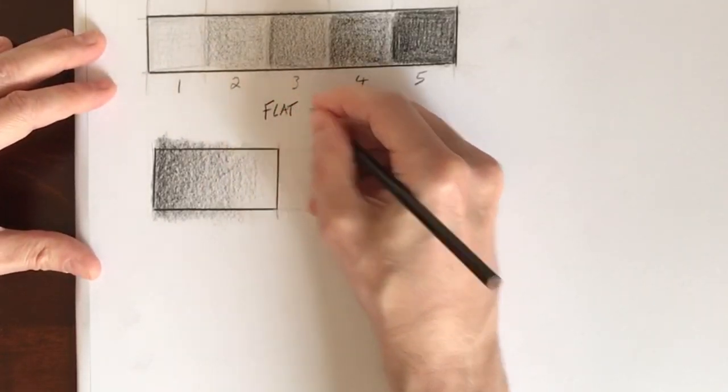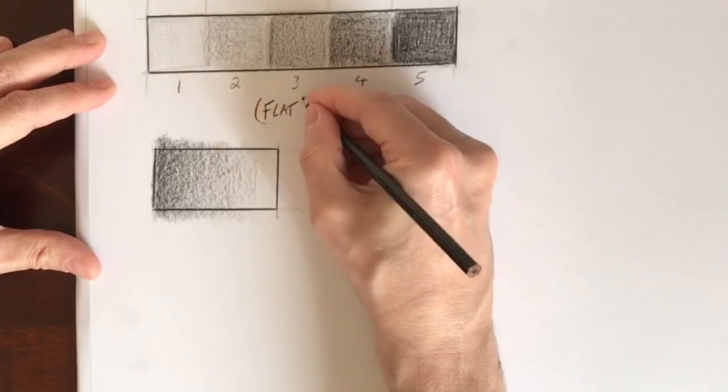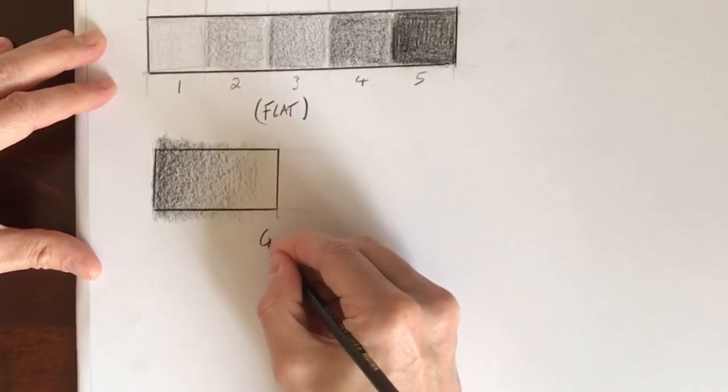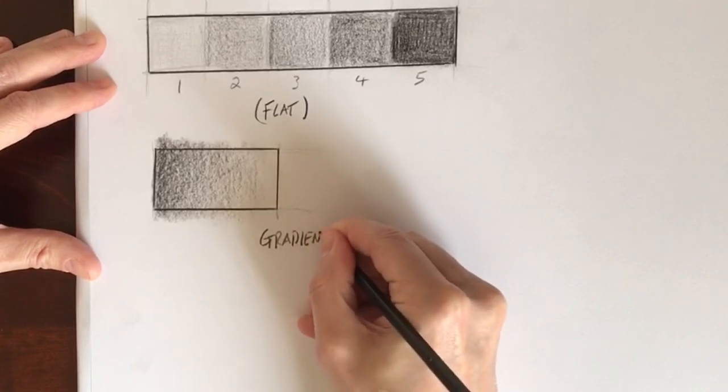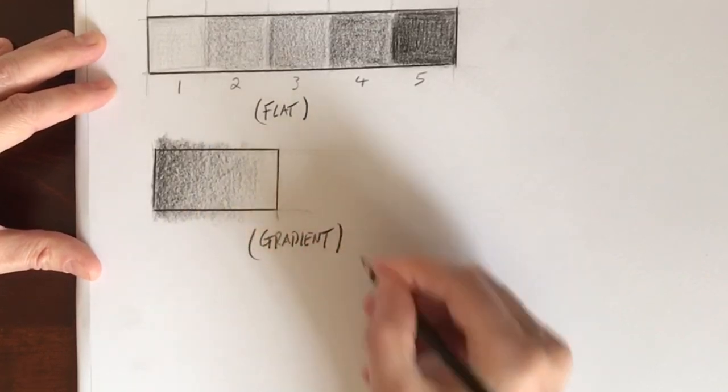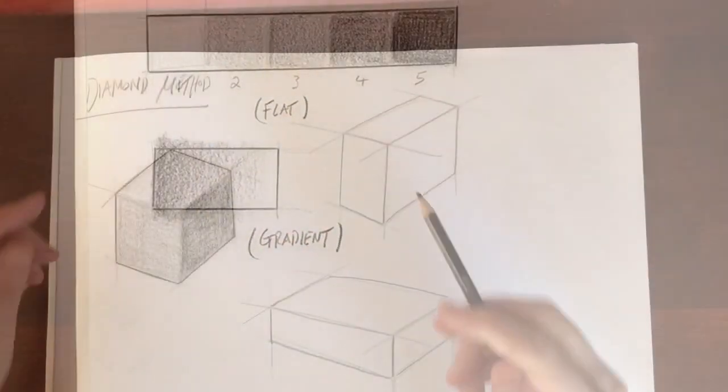So the flat tonal scale, any surface that has flat surfaces like a cube, we would use flat tones. If we've got an object that has curved surfaces, we would use gradient tone.